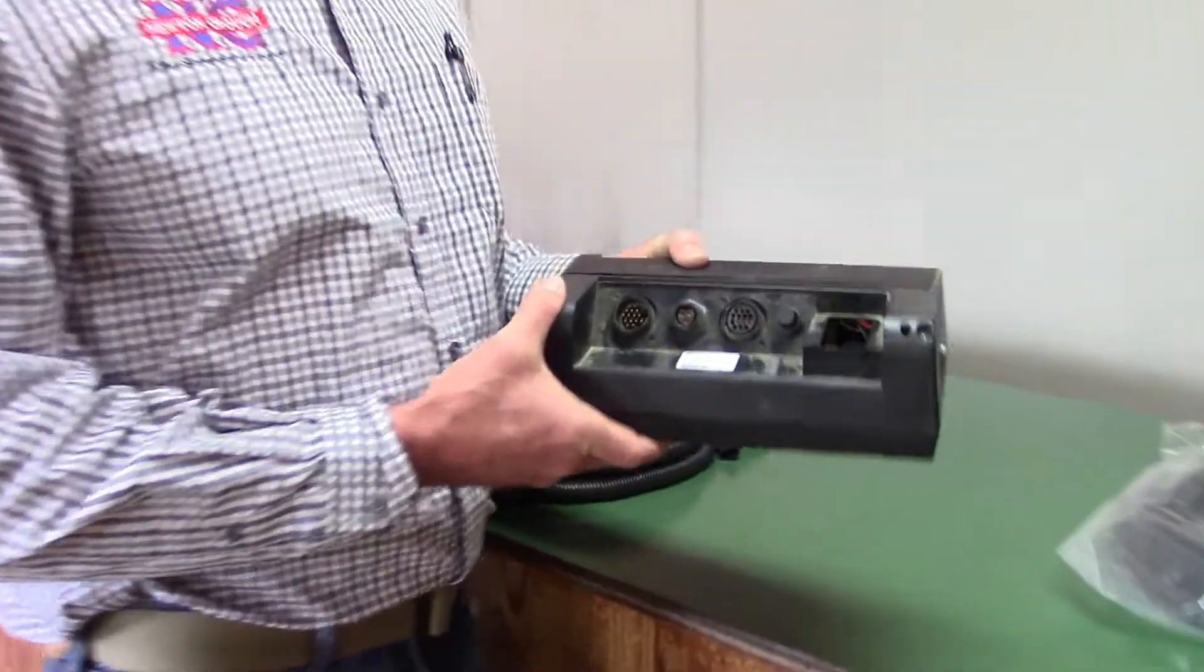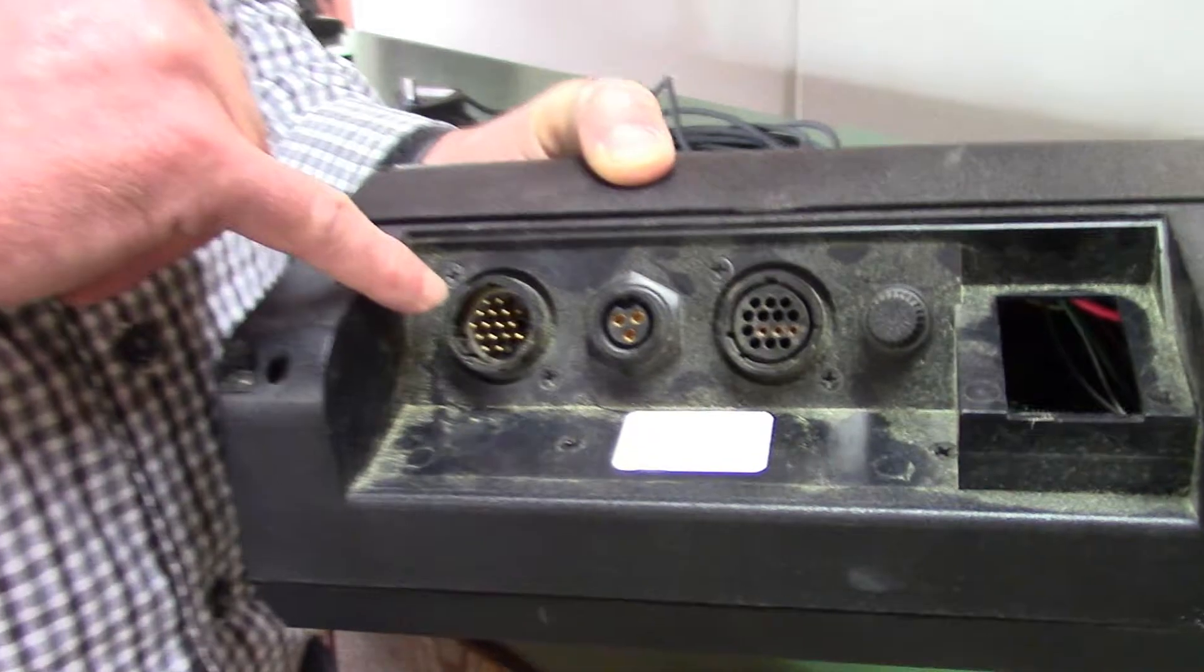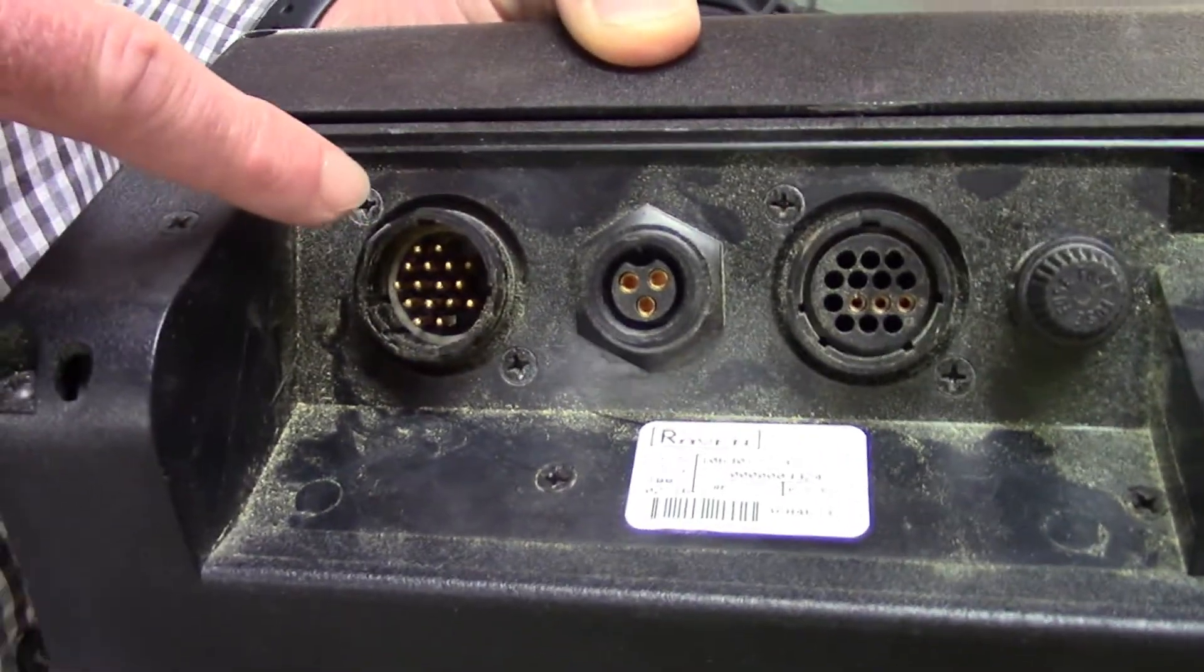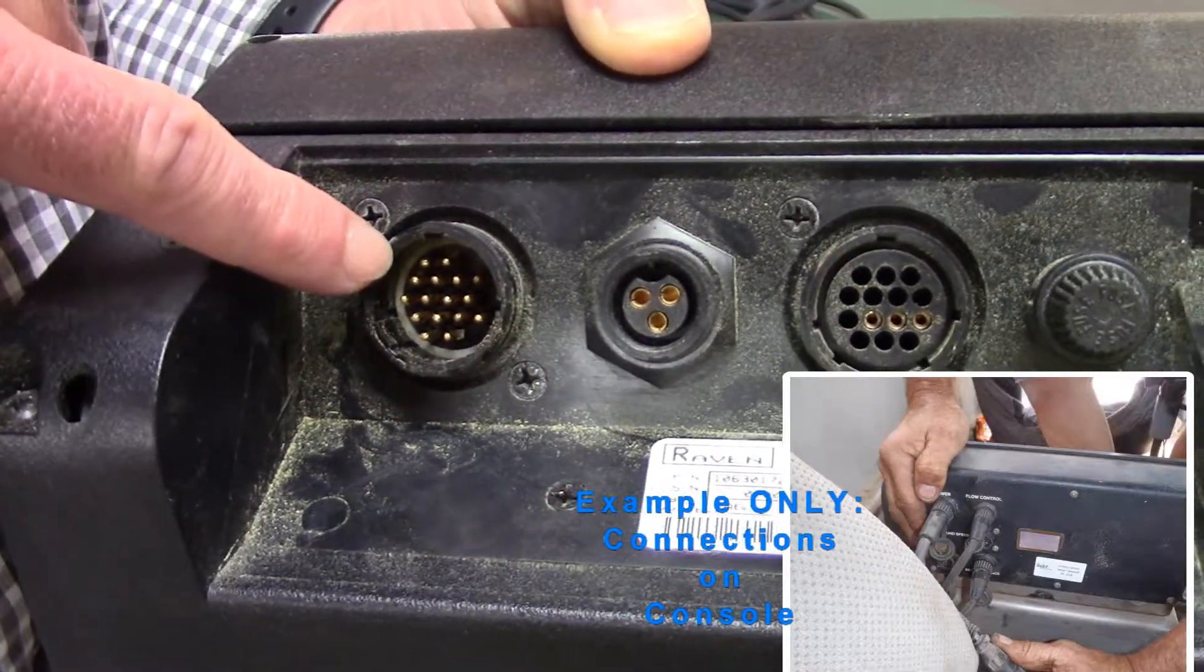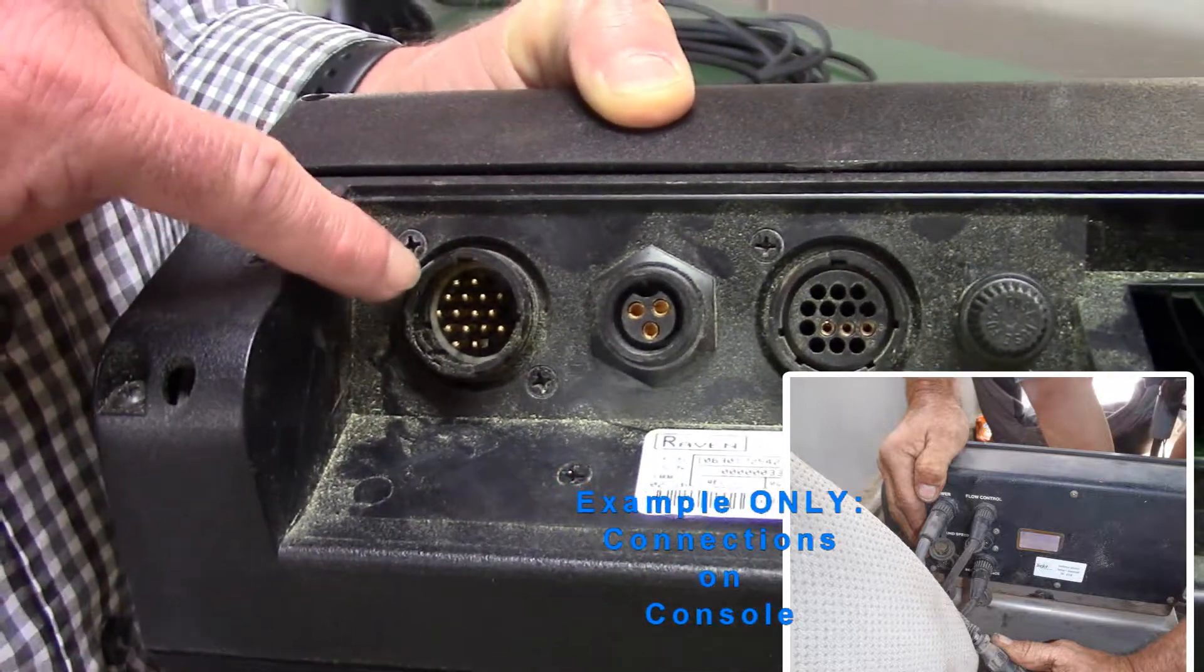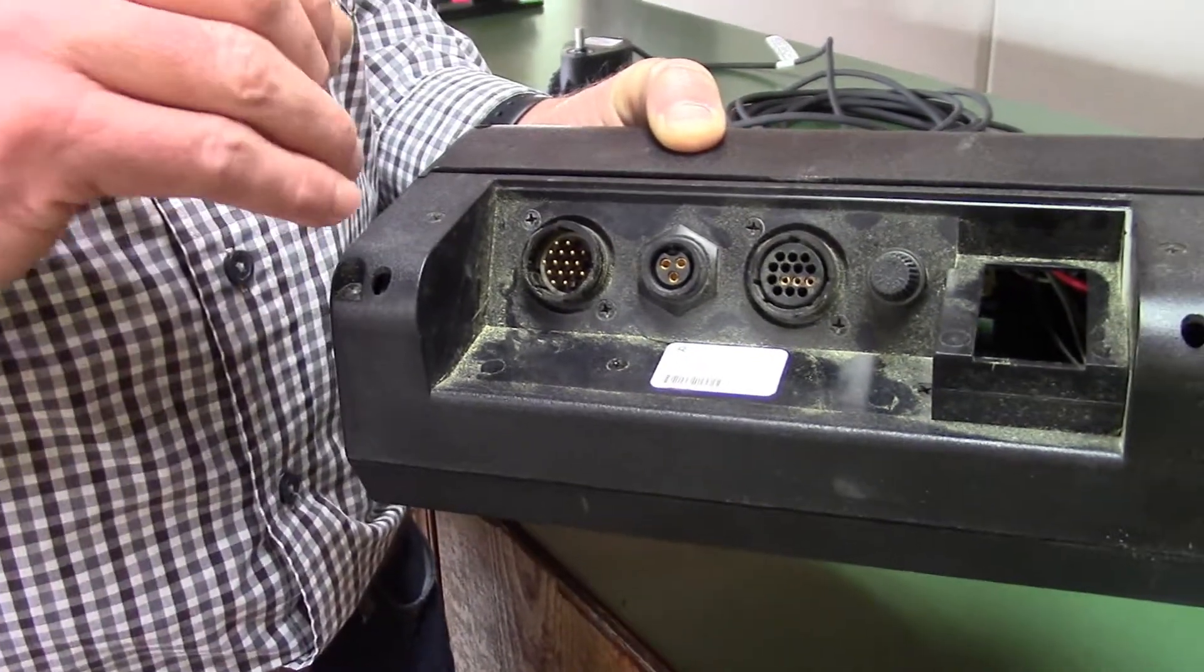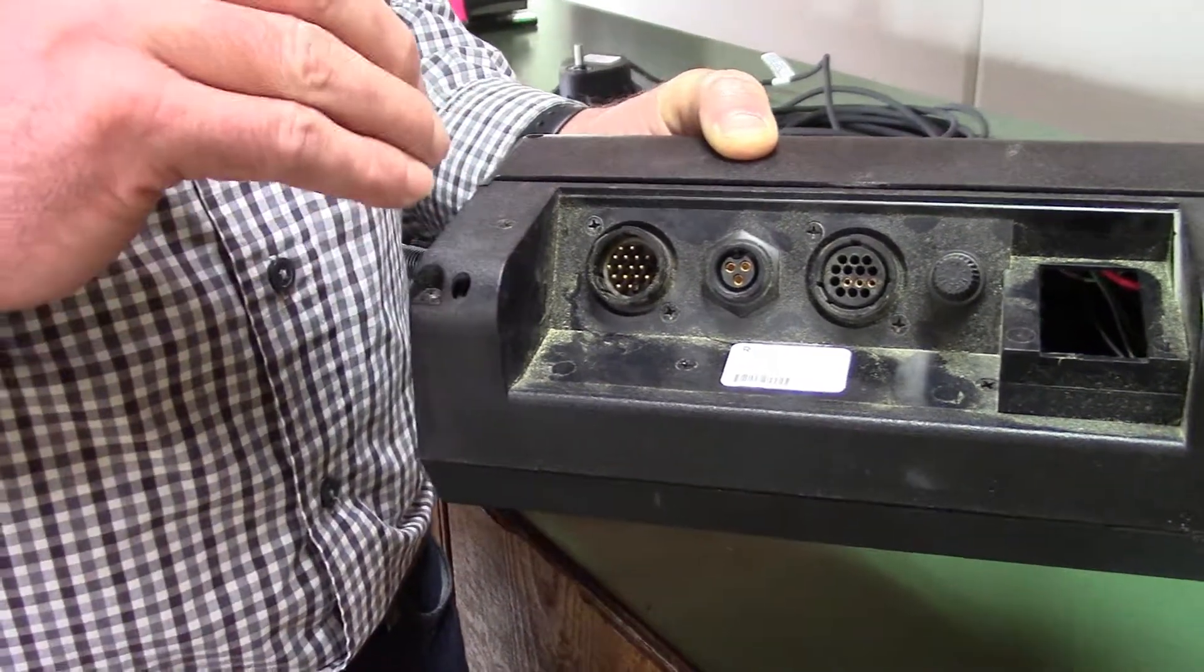Starting out at the controller, we have connections and all these pins here are where the chassis cable connects to the rate controller. Each one of these pins is sending a signal down a cable going to tell the body or the fertilizer spreader what to do.